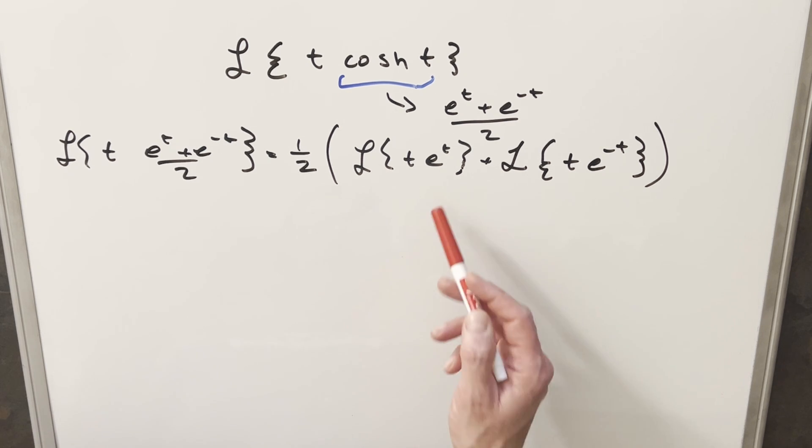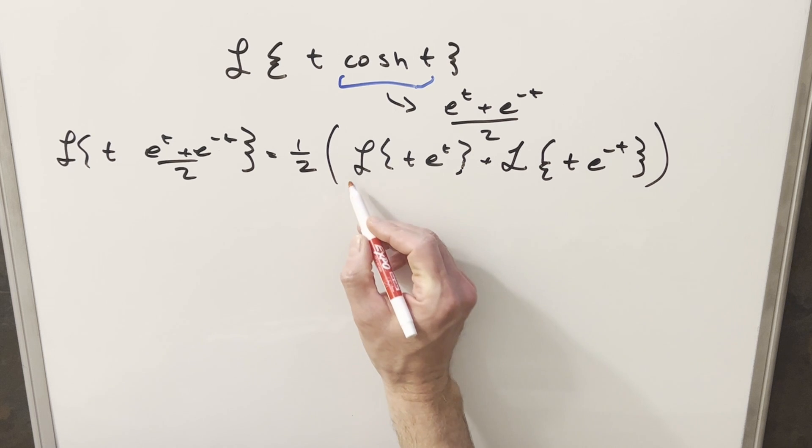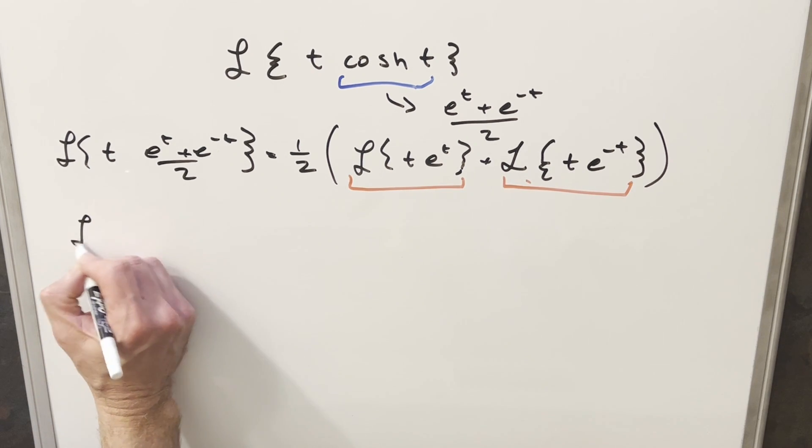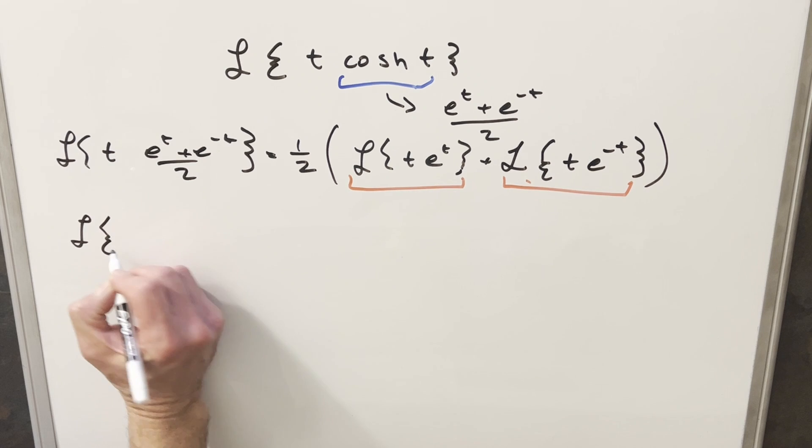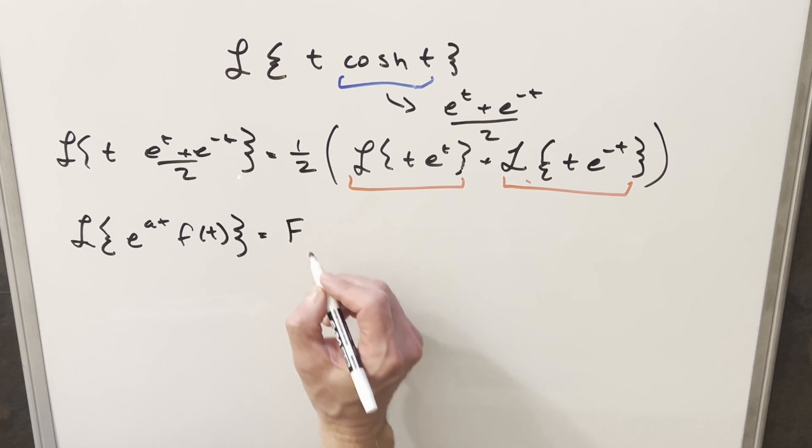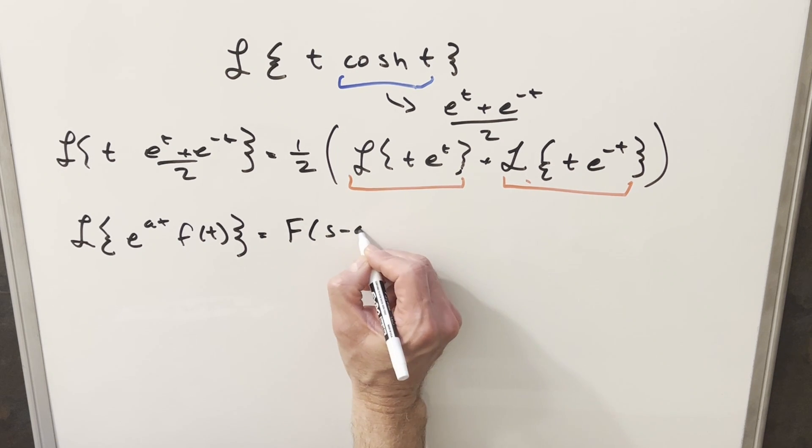From here this is pretty nice because we can do each of these based on formulas we've found in previous videos. What I want to use for these is the same formula for both. It's going to be Laplace of e to the at times f of t. The formula we found for this is just capital F of s minus a.